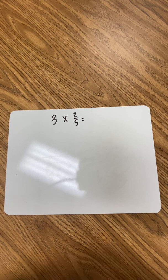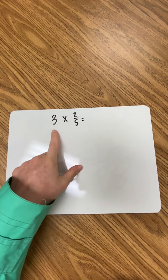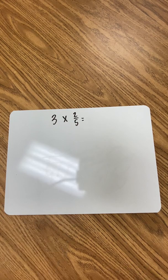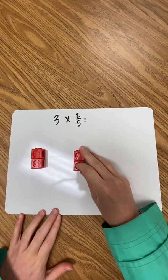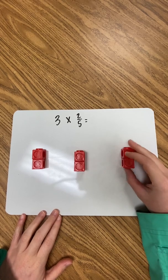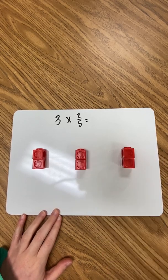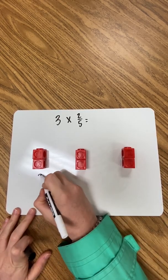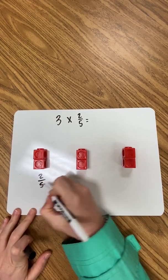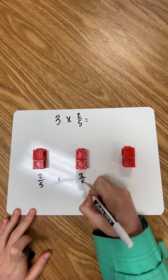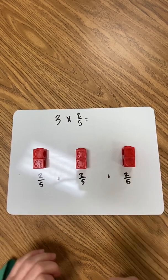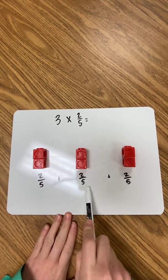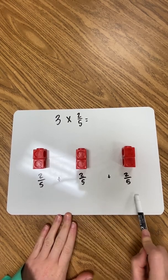Students would explain that multiplication is finding groups of equal amounts. This shows us that we have three groups of two-fifths. You could use unifix cubes to represent that you have three groups of two-fifths.